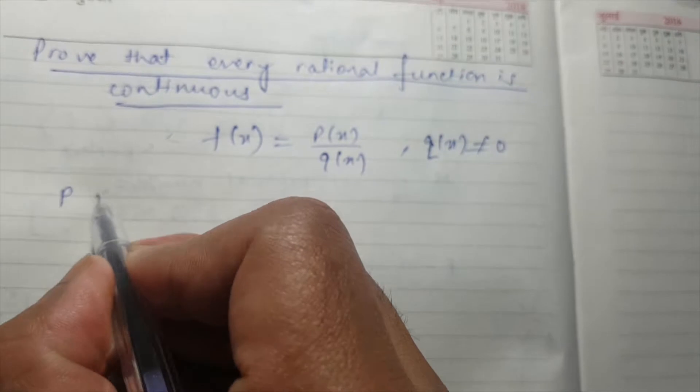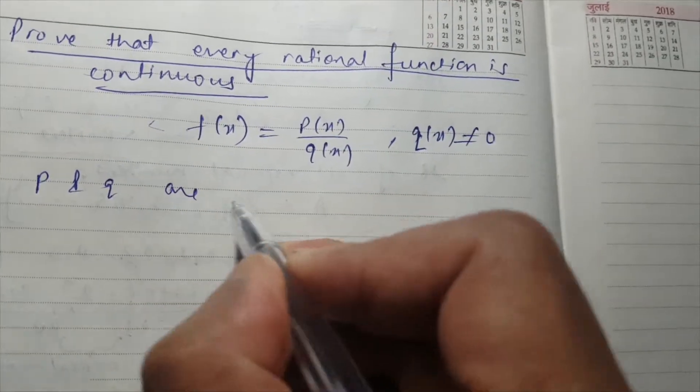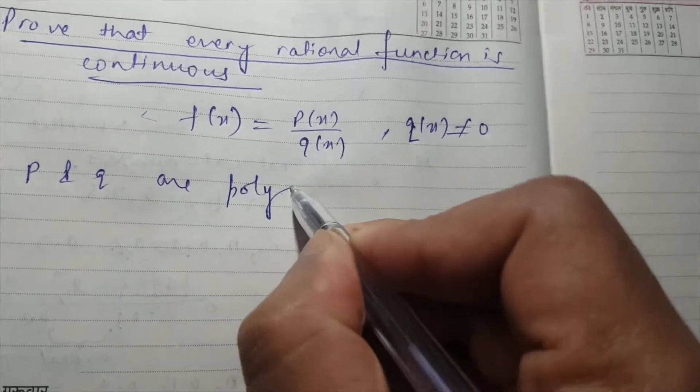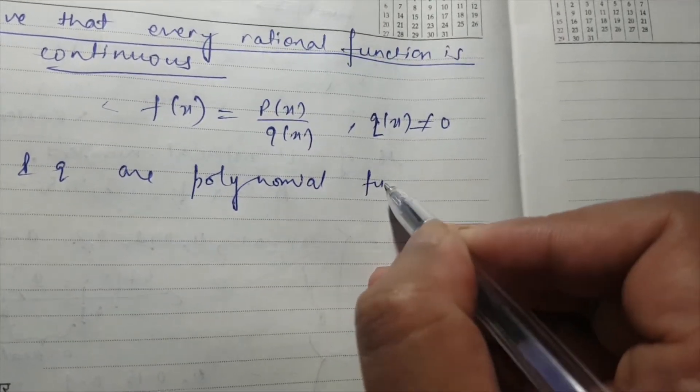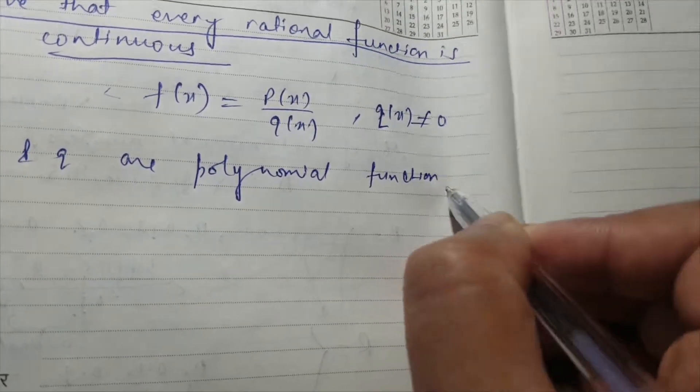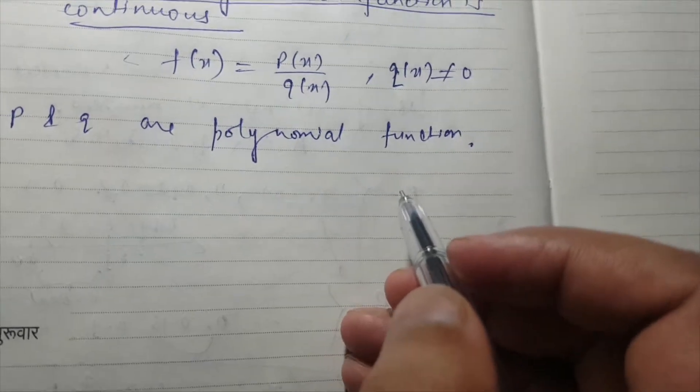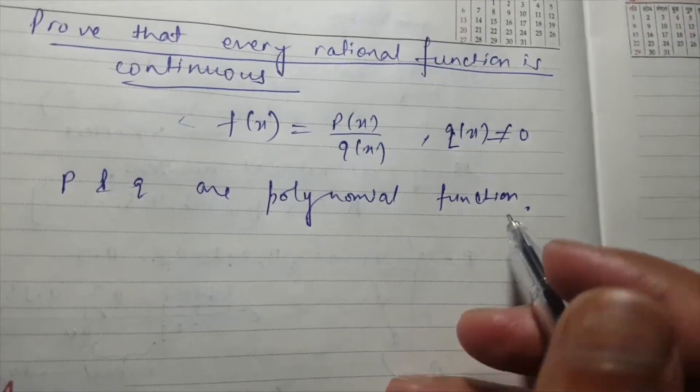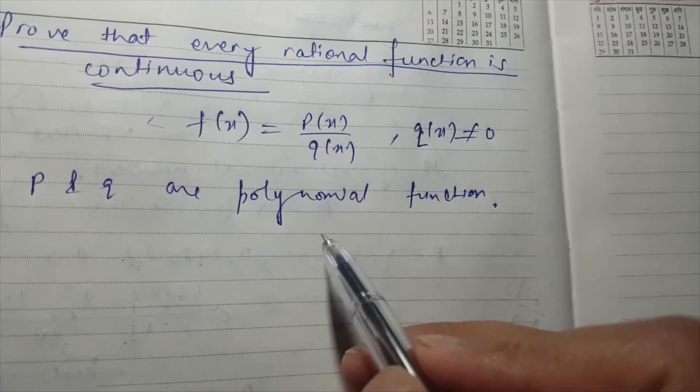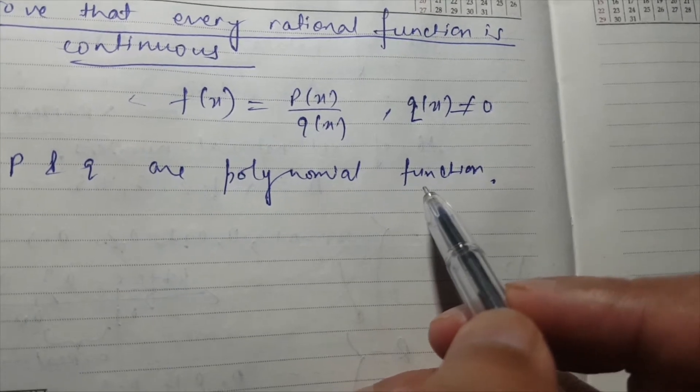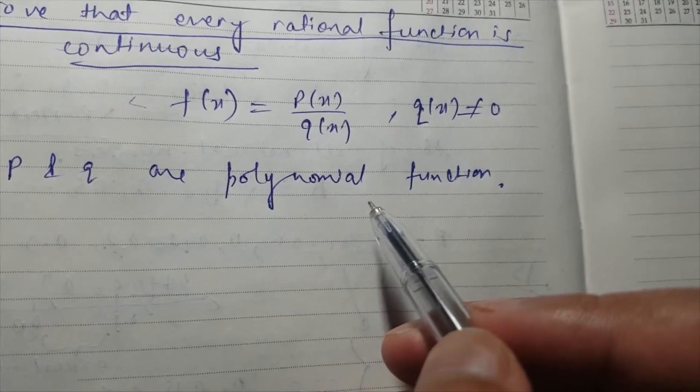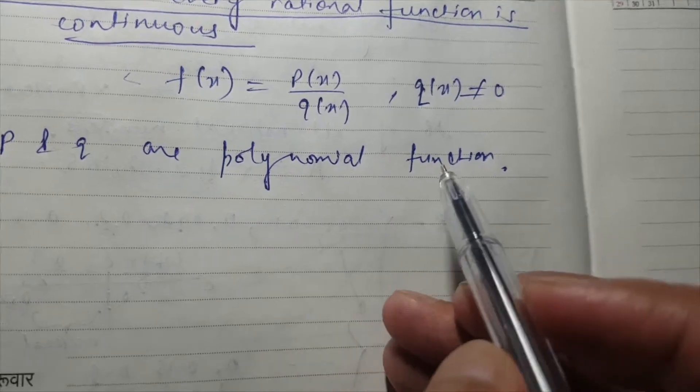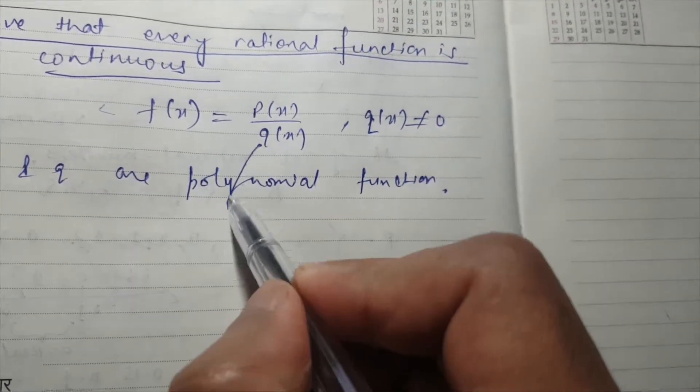Now p and q are polynomial functions. These two are polynomial functions, and we already know that polynomial functions are continuous at every point in their domain.